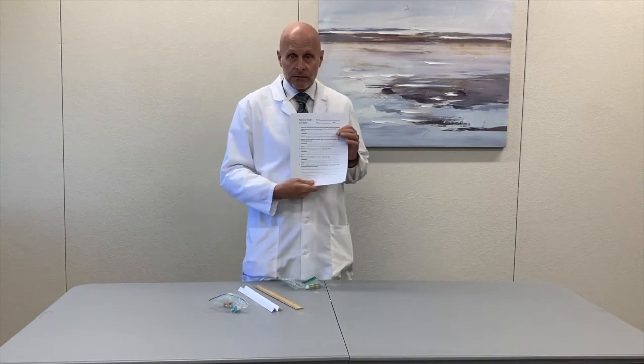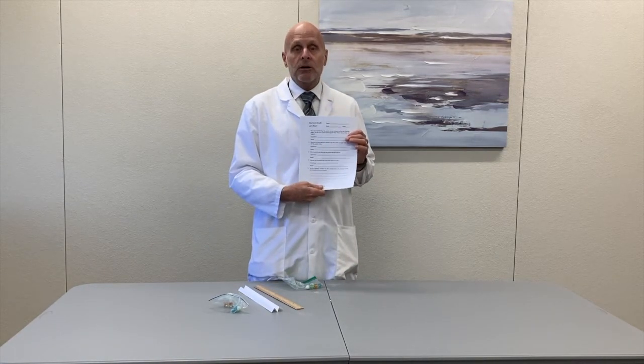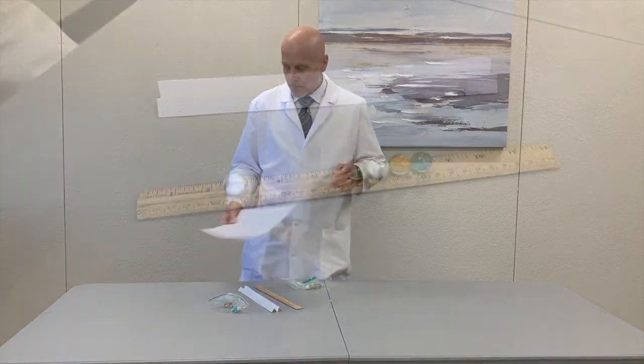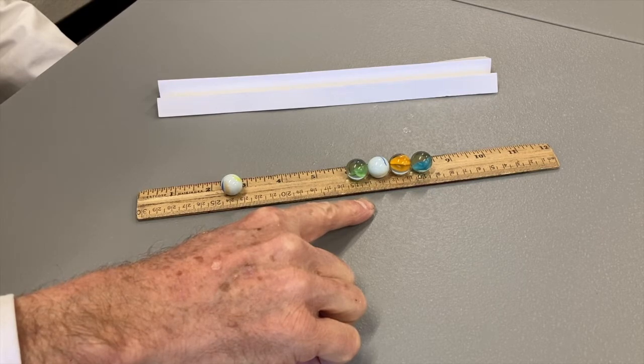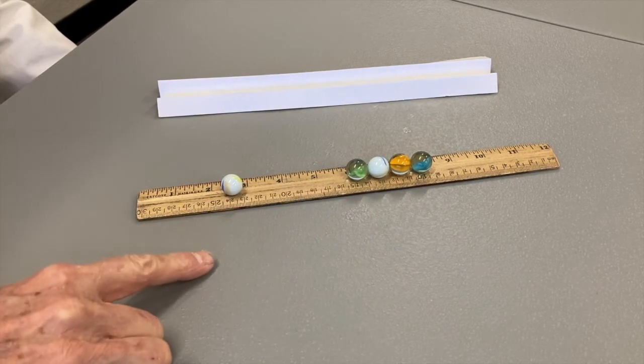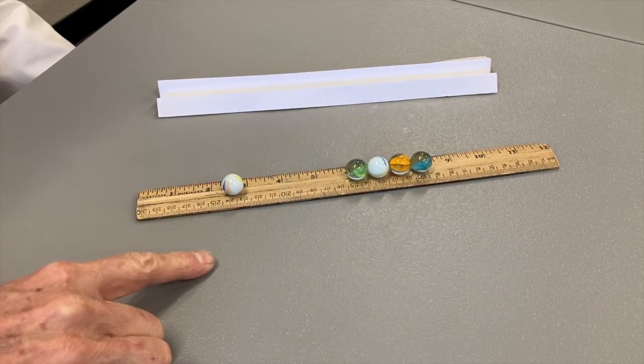And then of course the Newton's cradle lab sheet. Let's take a look at how this will work. Question one says place four marbles near the center of your channel so they are touching edges. We're going to roll a fifth marble against those. What do you think will happen?